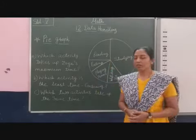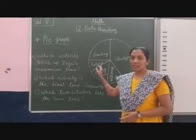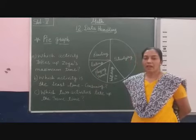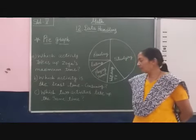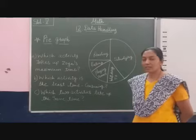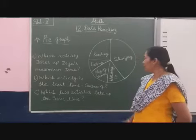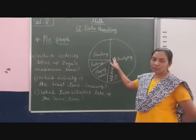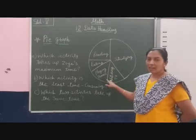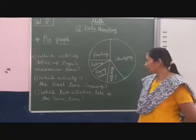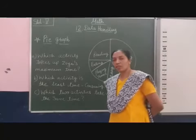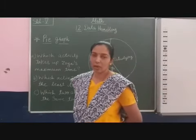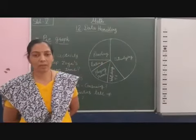So she consumed less time in eating. Next question: which two activities take up the same time? Looking at the pie graph, we can see that playing tennis and watching TV are the two activities for which Zoya spent the same amount of time.